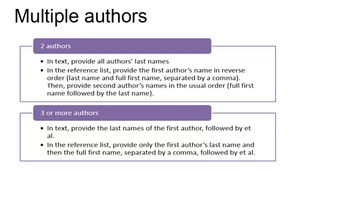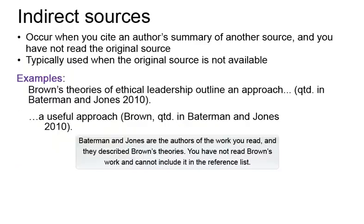For the works cited list, put the first author's name, then et al., and then the rest of the information. Indirect sources occur when you cite an author's summary of another source, not the original source. MLA recommends you use original sources as much as possible. However, if it is your only option, your parenthetical citation will include the abbreviation qtd in before the author's surname and page number of the indirect source. In this example, Bateman and Jones summarise Brown's ideas. You will only need to provide the source you actually read, Bateman and Jones, in your works cited list.